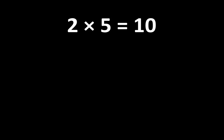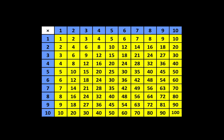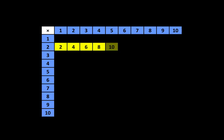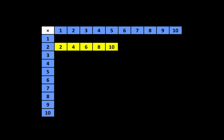2 times 5 is equal to 10, and there are many more important ideas. When we look at the multiplication table, we can see that 2 times 5 is equal to 10. 10 is a multiple of 2, and 10 is also a multiple of 5. In fact, 10 is the fifth multiple of 2 — counting 1, 2, 3, 4, 5 — and 10 is the second multiple of 5 — counting 1, 2.